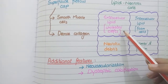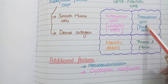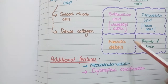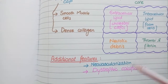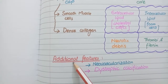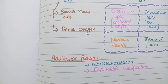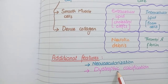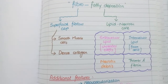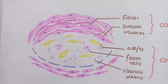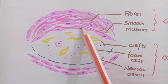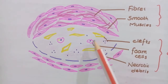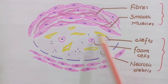Overall, the necrotic core contains extracellular cholesterol as cholesterol crystals, intracellular cholesterol as vacuoles in macrophages (foam cells), necrotic material, and few thrombi of platelets and fibrin. Two additional features are neovascularization — formation of newly formed vessels or vasa vasorum at the periphery of these plaques — and dystrophic calcification, meaning calcification of necrotic material. In the diagram, the fibrous cap contains smooth muscles and dense collagen, below which is the lipid necrotic core with cholesterol clefts, vacuolated macrophages, and necrotic material.